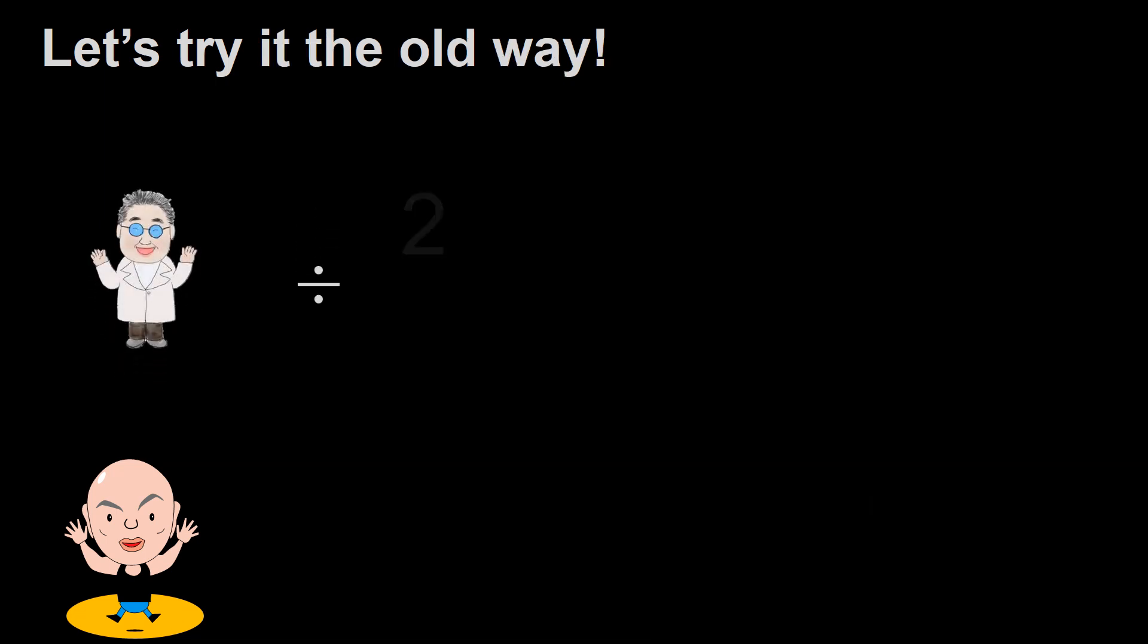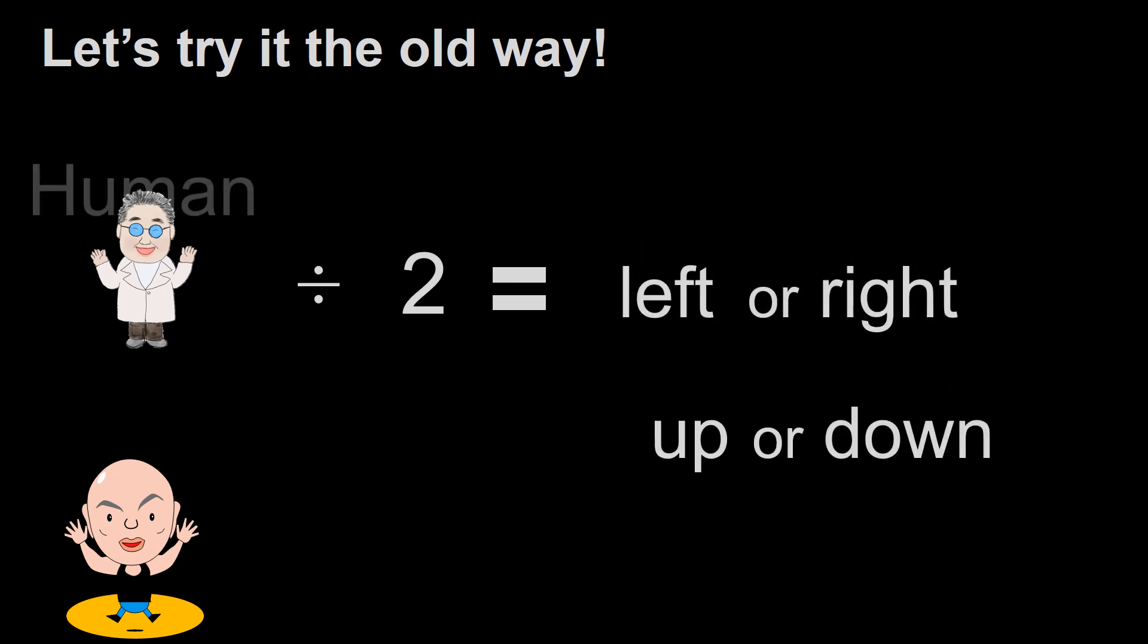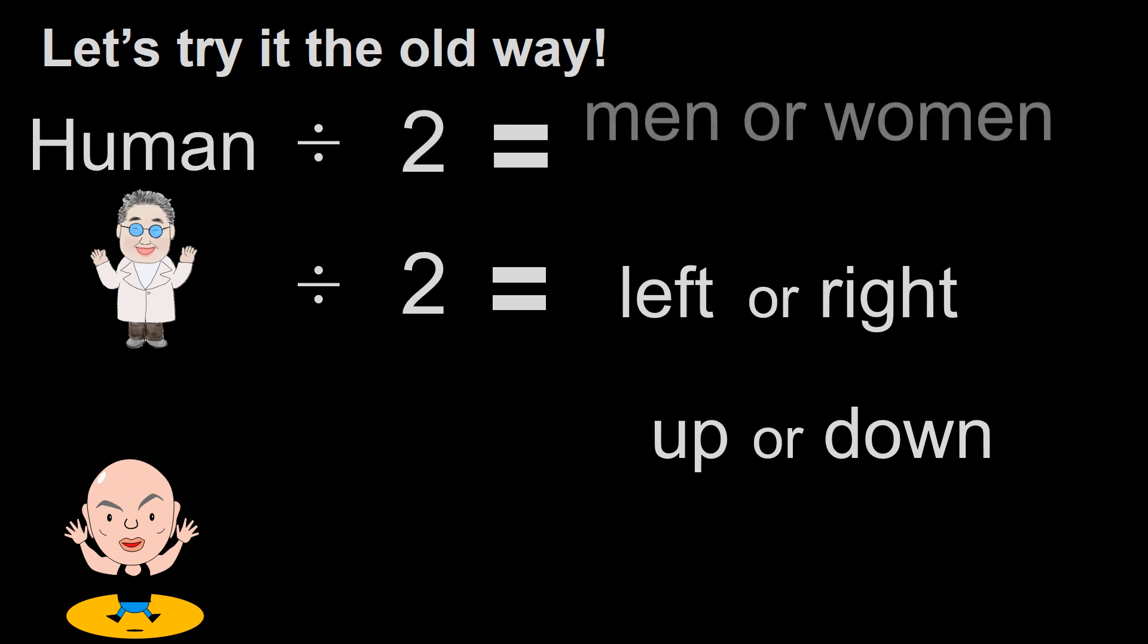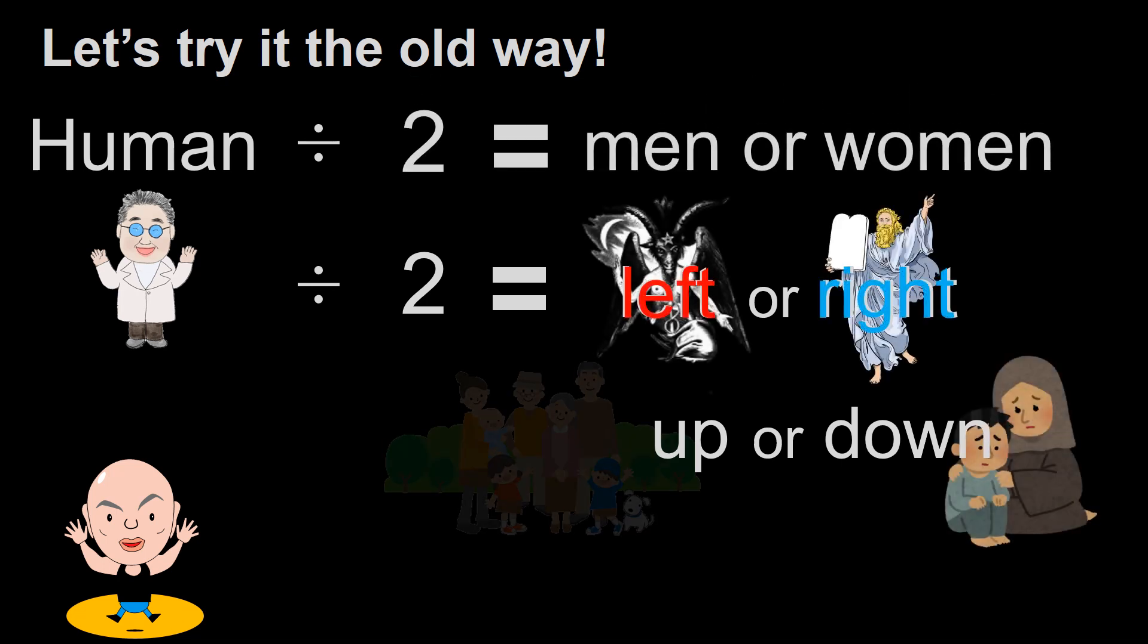Let's try it the old way. Human Divided 2 is Left or Right. Human Divided 2 is Up or Down. Human Divided 2 is Men or Women. Also, Angels or Demons.